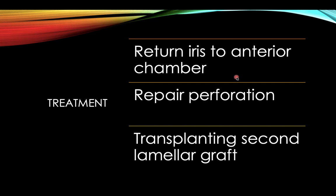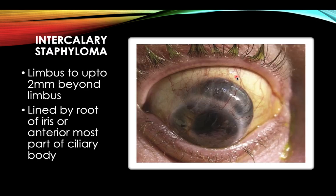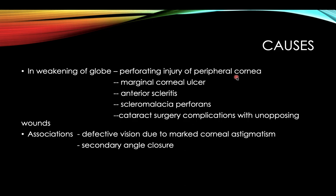The second type is intercalary staphyloma, extending from the limbus up to two millimeters beyond it, lined by the root of the iris or the anterior most part of the ciliary body. Causes include weakening of the globe due to perforating injury of the peripheral cornea or a marginal corneal ulcer.